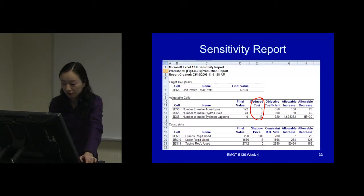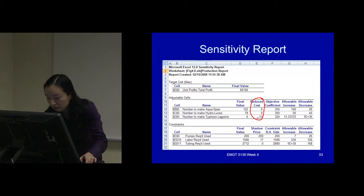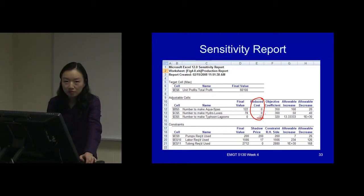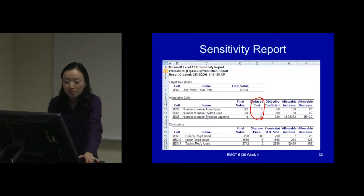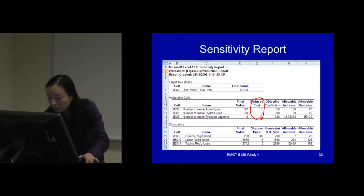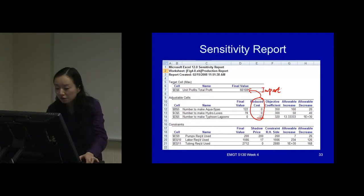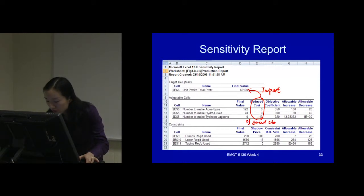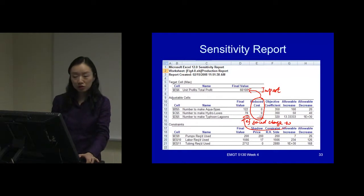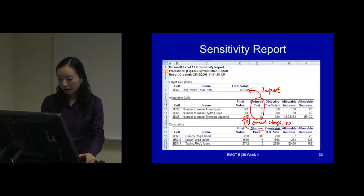We didn't really look at this reduced cost part before. Look at this third value — it should be negative 13.36. That's what we just calculated. That's the total impact on the objective function value if there is a forced change to this value — the reduced cost gives us the impact on your objective function value if the decision variable is forced to increase one unit.